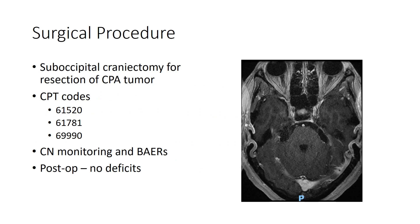In this particular case, because the tumor was contained well within the cerebellar pontine angle, a traditional suboccipital craniectomy was performed. CPT codes utilized were 61520 for craniectomy for resection of cerebellar pontine angle tumor; with navigation used to plan the craniectomy, 61781 was utilized; and the operating microscope was used for approach to the tumor and resection, so 69990 was coded. Cranial nerve monitoring and brainstem auditory evoked responses were used during the procedure. Postoperatively, the patient did well with no incurred deficits and resolution of her left facial pain, with postoperative MRI showing complete resection of the tumor.